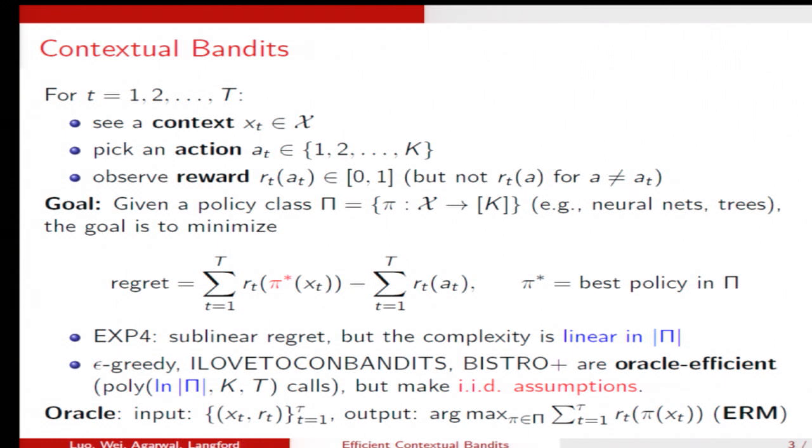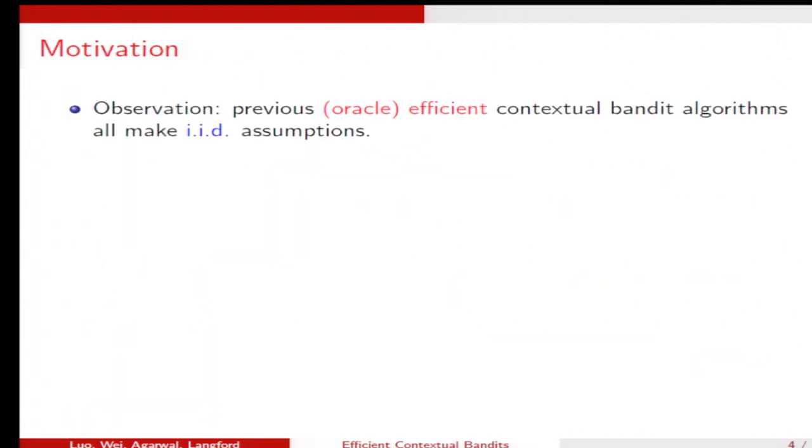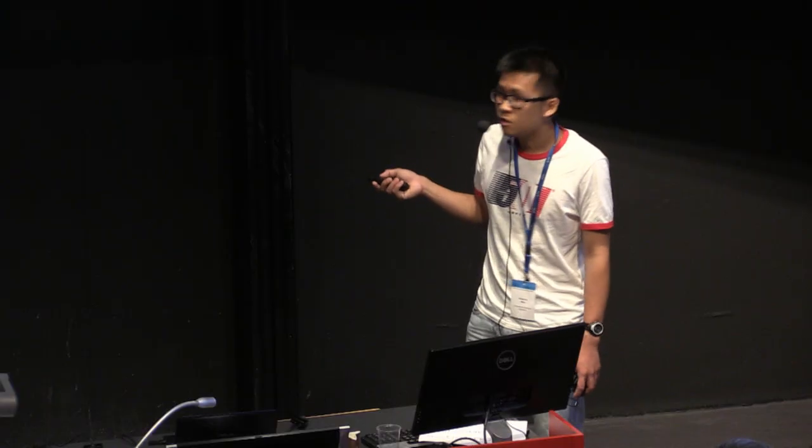So they are good because they are efficient, but they make some IID assumptions about the context or the reward. Our observation here is that previous efficient contextual bandit algorithms all make some IID assumptions. But this is questionable in the real world because non-IID is ubiquitous.